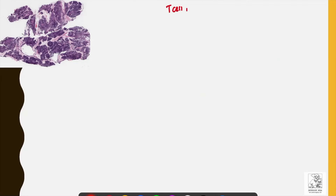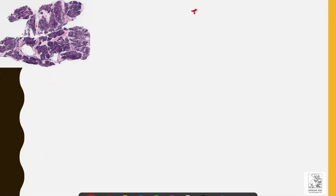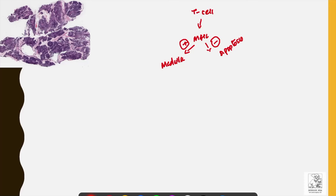T cell maturation happens in the thymus, and the cortex is composed of immature T cells. A process known as positive selection happens in the cortex. When naive or immature T cells are exposed to MHC molecules, if the T cell is able to recognize the MHC molecule, it proceeds into the medulla for further maturation. If it is unable to recognize these MHC molecules, it undergoes apoptosis.